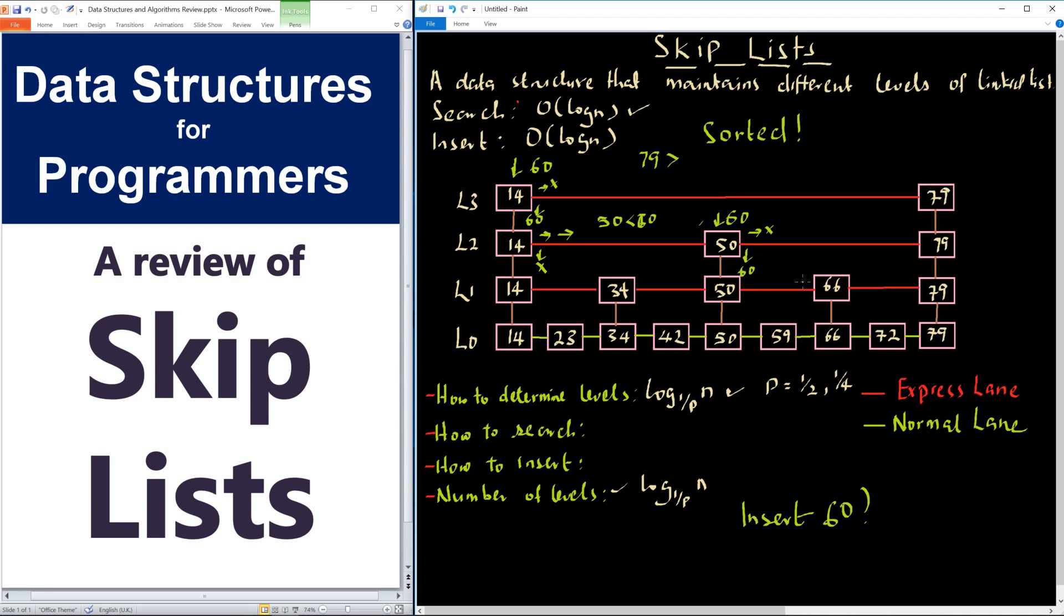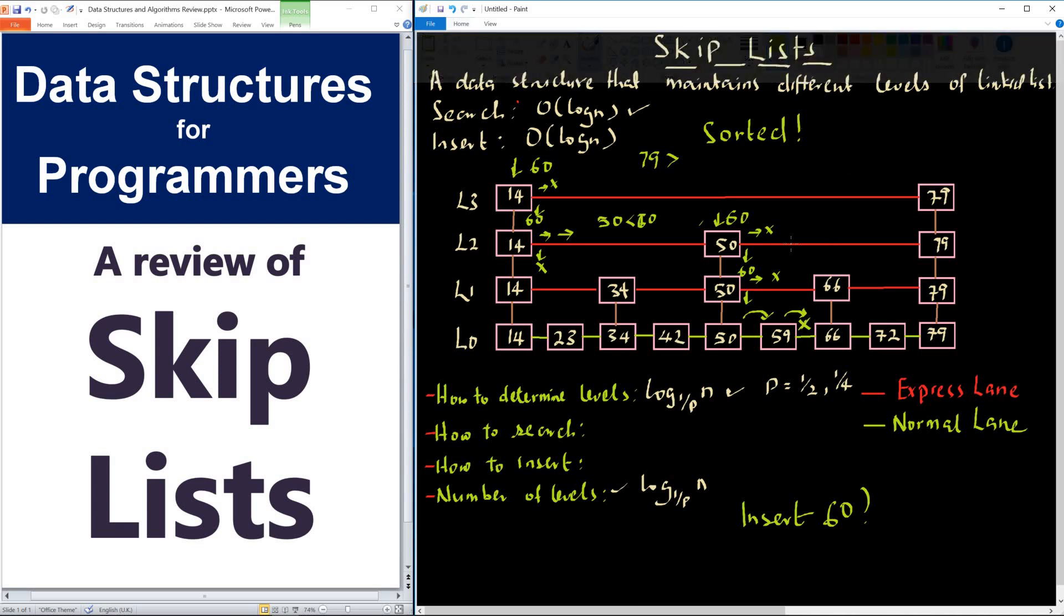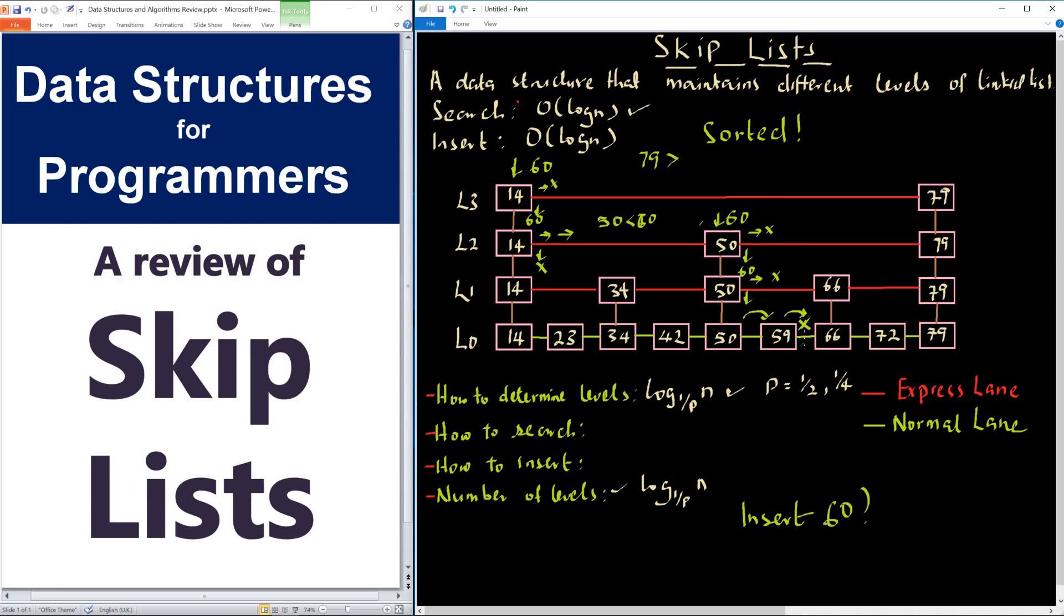We look at this point. 66 is greater than 60, so we can't go here. So we need to drop down to the normal lane. At this point, we now move gradually. We move this way. There's normal lane now, and we now find a place to insert 60. At this point, we can insert 60 in this position. That is basically how insertion works.